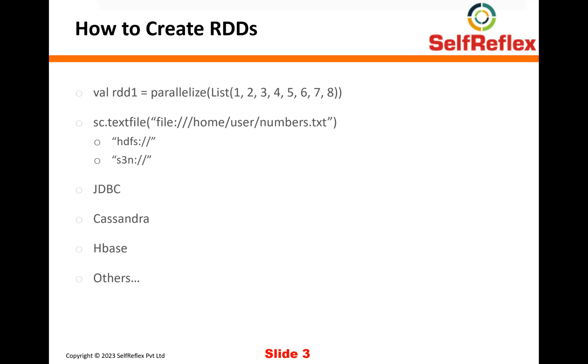You get a Spark Context by default when you are using Spark Shell, but when you are writing your own jobs, you explicitly create a Spark Context object. One simplest way of creating an RDD is you can hard code your data into a list and then you can use the Parallelize function.